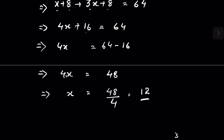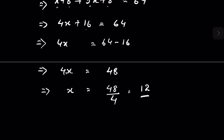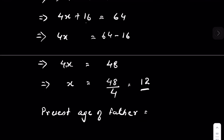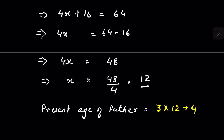This x is the age of the son four years ago. The present age of the father is three x plus four. So three times 12 is 36, plus 4 equals 40. The present age of the father is 40 years. Four years ago he was 36, which is three times the son's age four years ago.